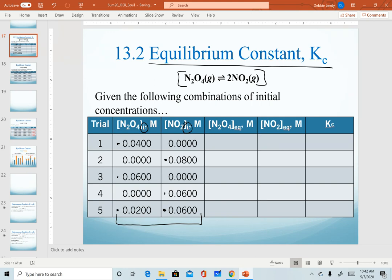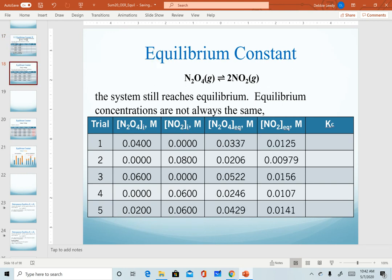Again, equilibrium will be reached no matter what I start with in this reaction. I can't use those values to calculate equilibrium because they are initial. I would have to use equilibrium quantities. These next two columns are showing once the system comes to equilibrium, how much of each substance do I have in the container?